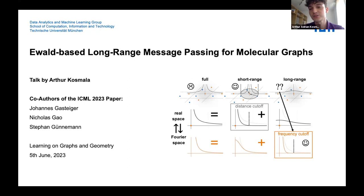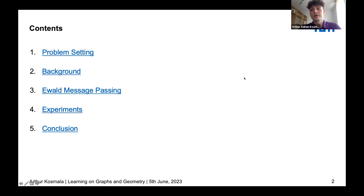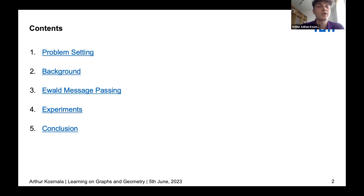Just so you have an overview: I will start with the type of problem setting that we're looking at, to have a sharp definition. I will then discuss the background, a few notions particularly regarding materials and periodic systems, so everyone is on the same page. Afterwards, I'll get to our main technique of Ewald message passing, then discuss our empirical studies, and finally draw a conclusion about what Ewald message passing achieves in practice.